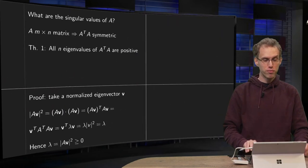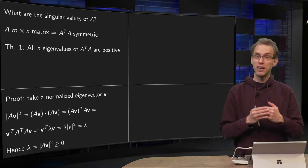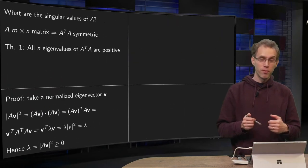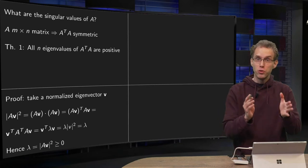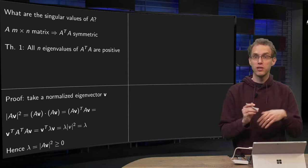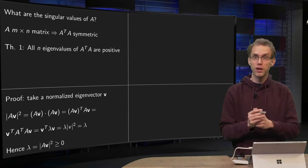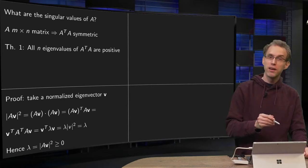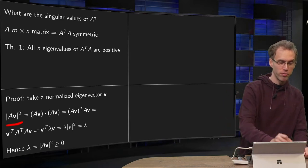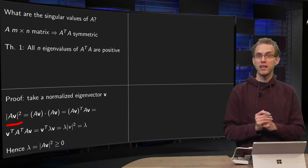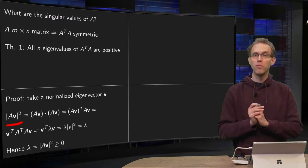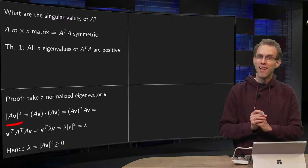We have a small proof for that. We start with a normalized eigenvector V of A transpose times A, so the norm of V equals 1, and then we are going to compute the norm of AV squared. Watch and see why.